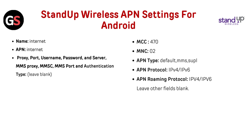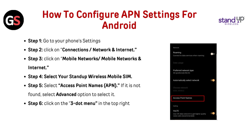MCC: 470. MNC: 02. APN Type: Default, MMS Supl. APN Protocol: IPv4 or IPv6. APN Roaming Protocol: IPv4 or IPv6. Leave other fields blank. How to configure APN settings for Android?